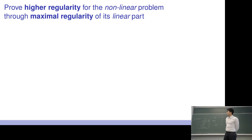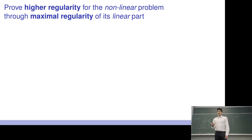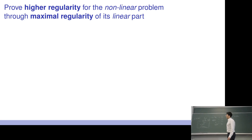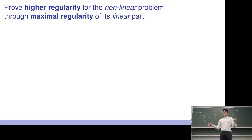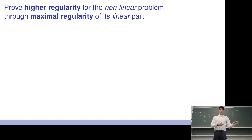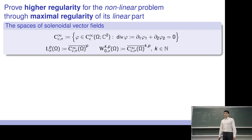We stick to the two-dimensional case, where we have existence and uniqueness of a weak solution. We want to show that these solutions are more regular than what one gets from just the Leray-Hopf approach. We do this by linearizing our problem — looking at the linear part of Navier-Stokes — and then using maximal regularity of the linear part to improve the regularity of the solution we had before.